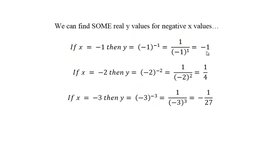If x is negative 2, we get 1 over negative 2 squared, which is positive a quarter. And then when x is negative 3, we get negative 1/27th. So I'll put those on the graph.